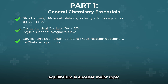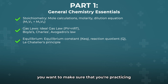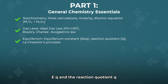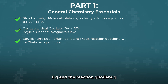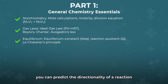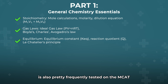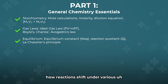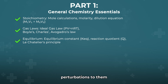Equilibrium is another major topic. You want to make sure that you're practicing problems that involve the equilibrium constant, Keq, and the reaction quotient, Q, so that you can predict the directionality of a reaction. Le Chatelier's principle is also pretty frequently tested on the MCAT — it's going to test your ability to predict how reactions shift under various perturbations.